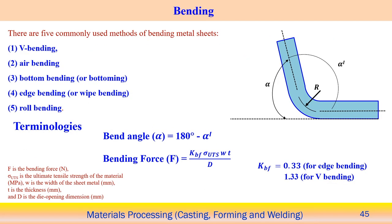When we consider sheet metal, there are five different methods we usually use to bend sheet metal. One is V-bending, which produces a V-shape. Another is air bending, where we can use air pressure to bend the sheet metal. Then there is bottom bending and edge bending for different geometric parts. Roll bending uses a roller to bend the component. In principle, some amount of plastic deformation is always associated with bending operations.